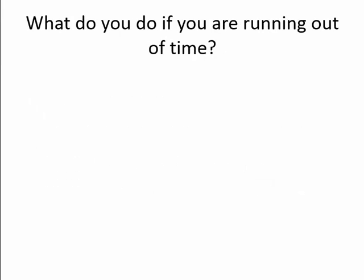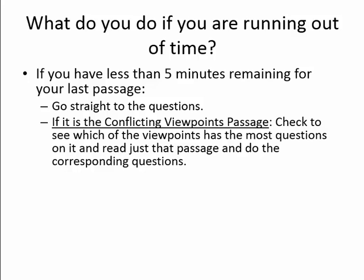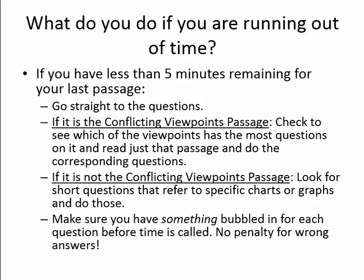So what do you do if you're running out of time on the ACT? This is far more likely to happen than not, so you want to be prepared for this scenario. Let's say you have less than five minutes remaining for your last passage. First of all, forget the passage entirely and go straight to the questions. If you followed my advice and are left with the conflicting viewpoints passage as your last one, do a quick scan of the questions to see which section has the most questions and read that one first. If you're left with a non-conflicting viewpoints passage, look for the short and easy questions that refer to specific charts and graphs — check our video on science question types to help determine which questions these are. And finally, definitely make sure you have something bubbled in for everything before time is called. There's no penalty for wrong answers on the ACT, so don't waste this opportunity for a few lucky guesses to pan out in your favor.